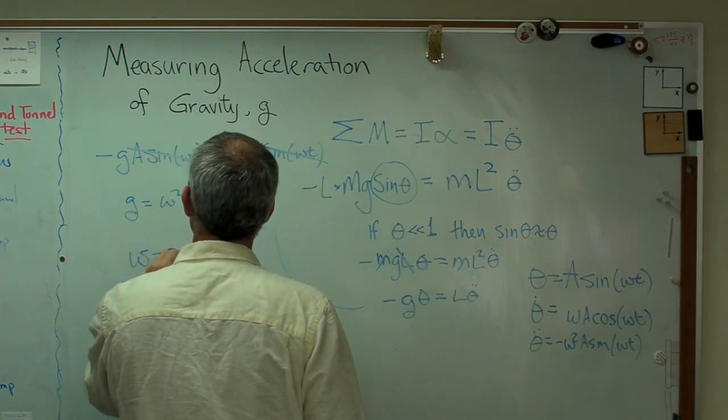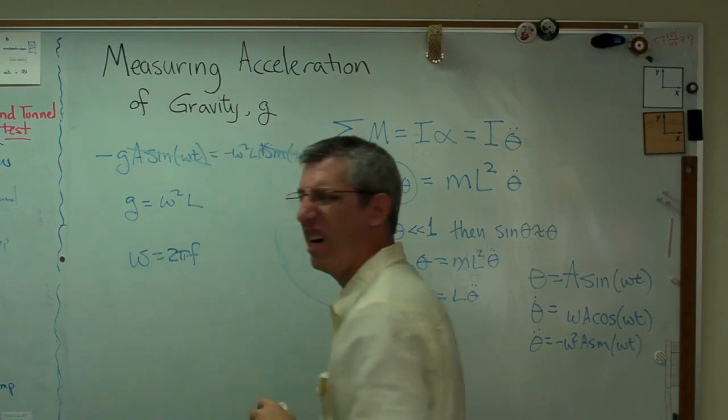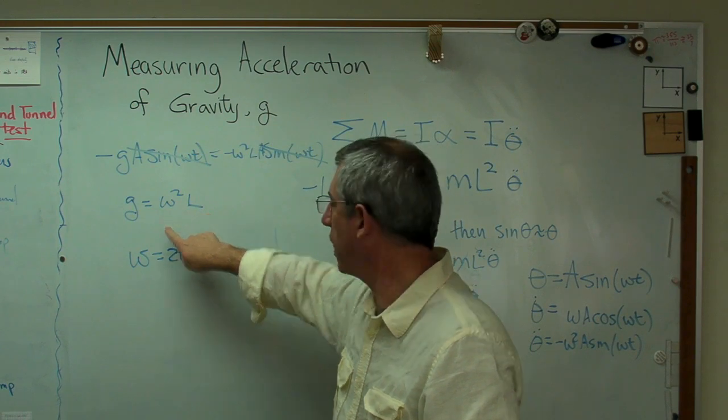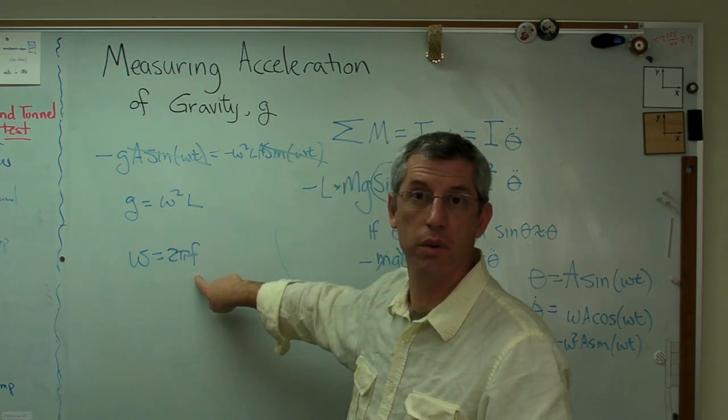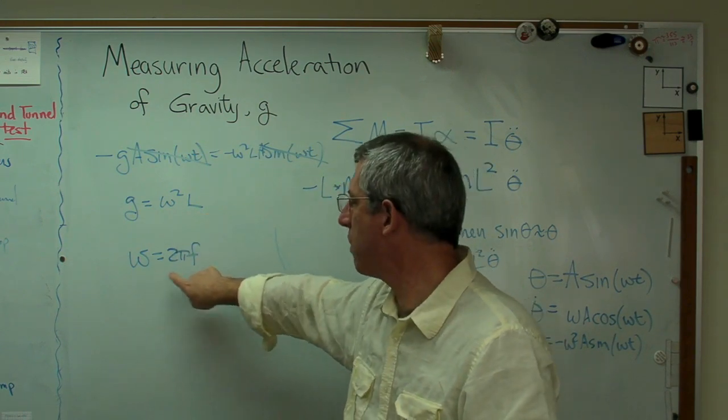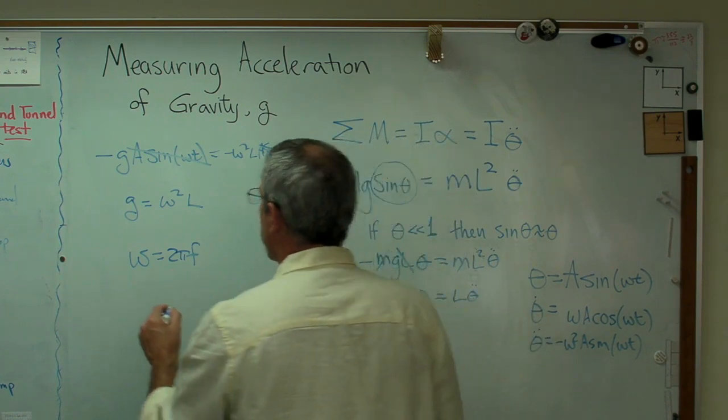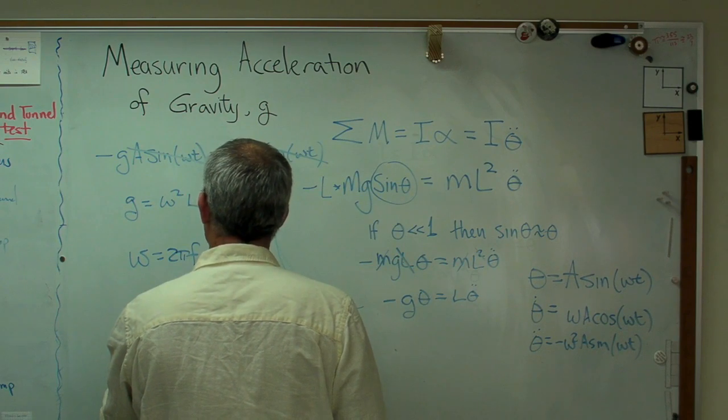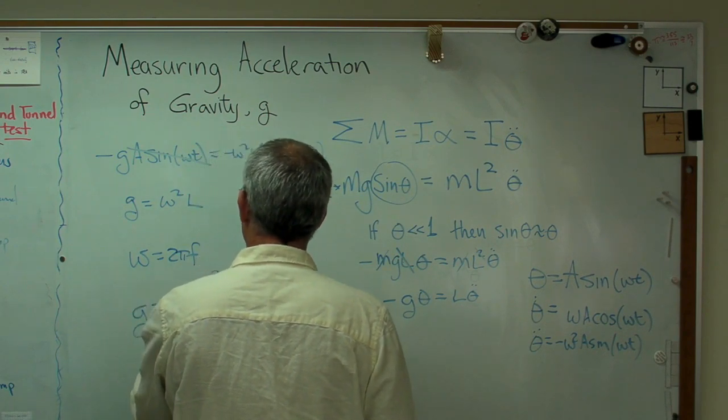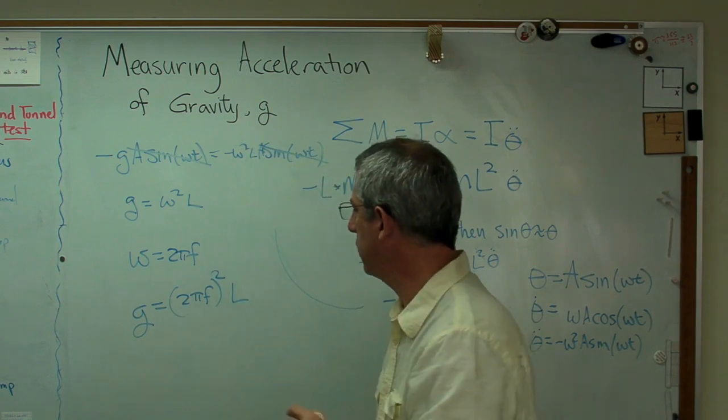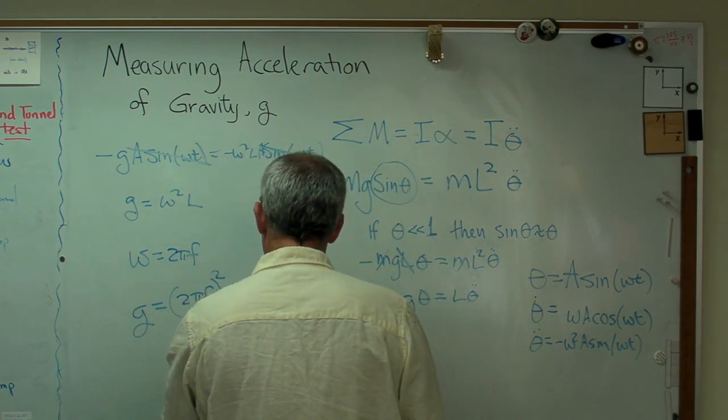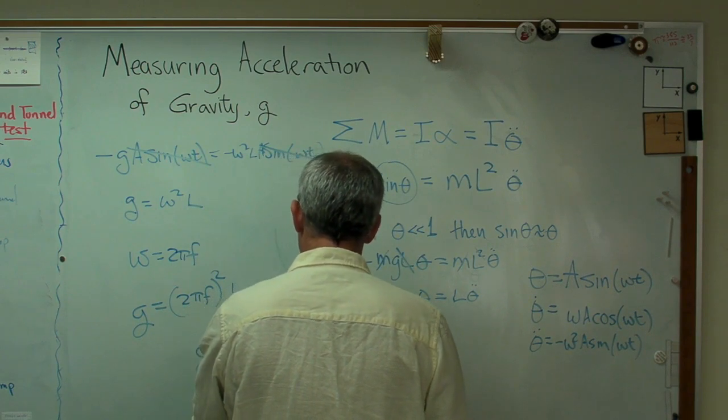Omega equals 2 pi F. I don't know about you. Even though omega is mathematically what we should use there, that's in radians per second, I'm much more comfortable working with cycles per second. I know how to measure that much better. So what I got now is G equals 2 pi F, all that stuff squared, times L. So here we go, 4 pi squared F squared L.